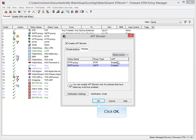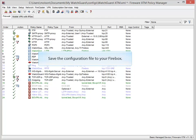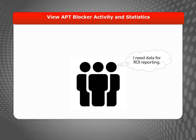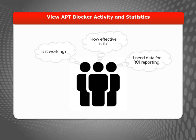Click OK to save the settings. The last thing to do is save the configuration file to the Firebox. That's it! Now that APT Blocker is scanning traffic for malware threats, it's good to make sure you know what APT Blocker is doing and how it protects your network.